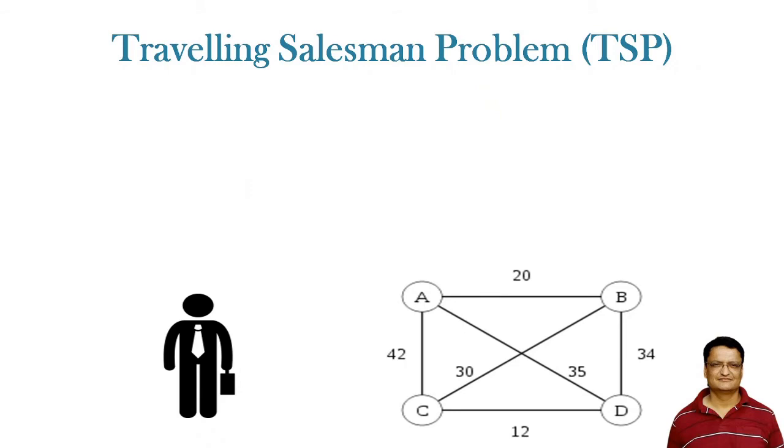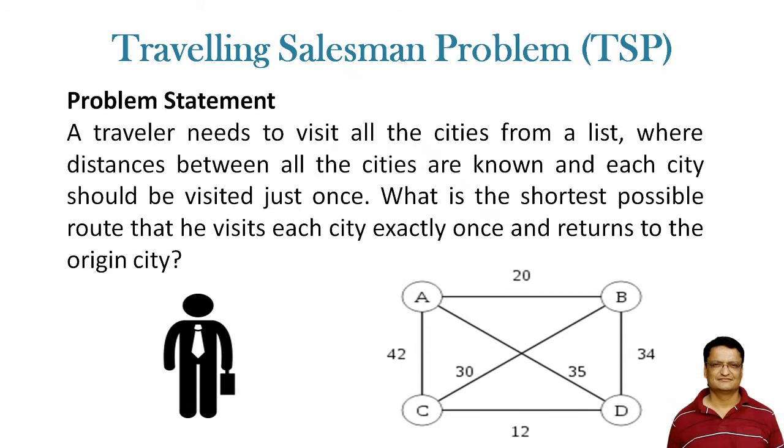The traveling salesman problem is one of the very wonderful problems in the field of operations research. A traveler needs to visit all cities from a list where the distances between all cities are known, and each city should be visited just once.